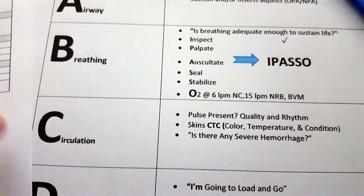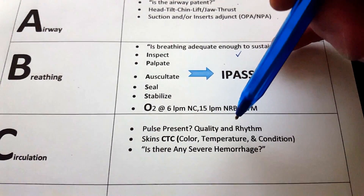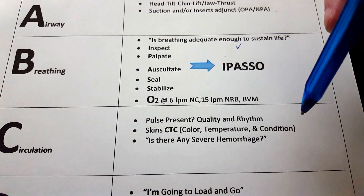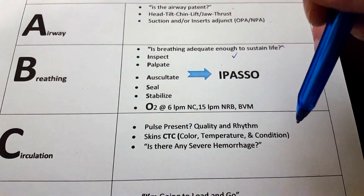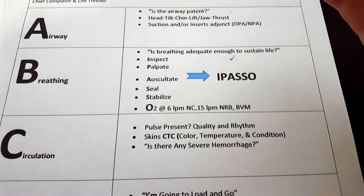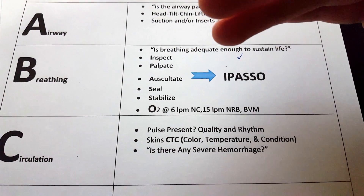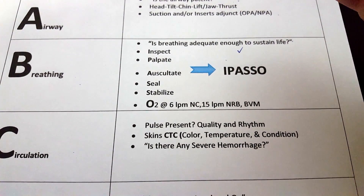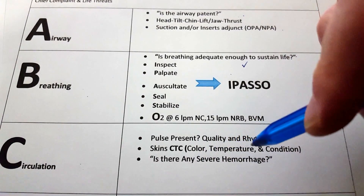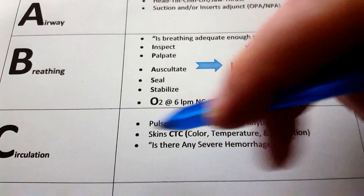Next, circulation. Get a pulse and identify the quality and rhythm. Tell the proctor what you got and ask if that's correct for the scenario. Then assess skins using CTC — color, temperature, and condition. Ask the proctor what the color, temperature, and condition of your patient is. If normal, you might say dry, warm, pink skin — then confirm with the proctor. Also ask: is there any severe hemorrhage or bleeding I should be aware of? Asking these questions will get you all your points for circulation.